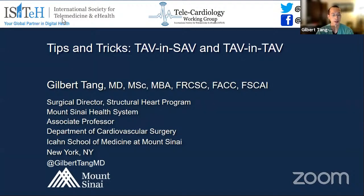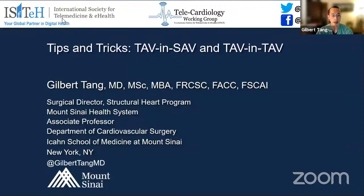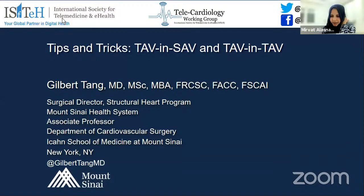First, distinguish valve degeneration from prosthesis-patient mismatch (PPM). In PPM, valve function on TEE is normal, there is no leaflet abnormality, and EOA may be normal — the surgical valve was simply too small. TAVR in PPM may not truly help because the surgical valve frame constrains expansion. A case example: a 73-year-old obese female with a 19mm Trifecta valve with non-high STS score. Since the TEE showed a normal valve and the 19mm Trifecta cannot be cracked or fractured, the patient may be better served by surgery with root enlargement rather than valve-in-valve TAVR.